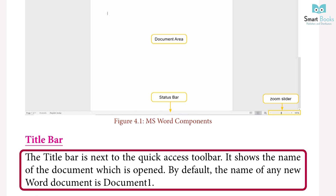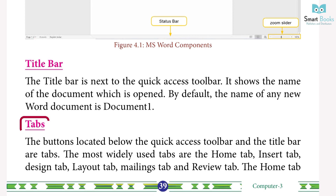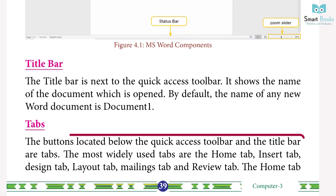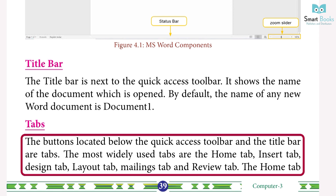Do you know how to create a shortcut of Word 2016? Drag its icon to the desktop. Title Bar: the title bar is next to the Quick Access Toolbar. It shows the name of the document which is opened. By default, the name of any new Word document is Document 1.